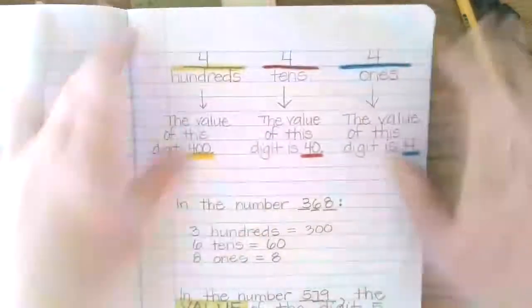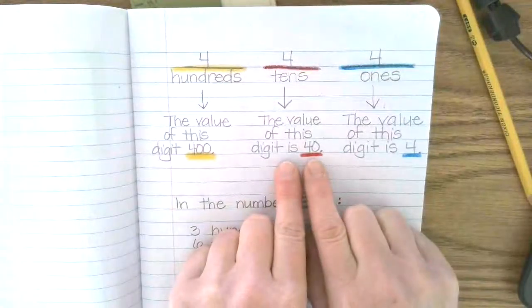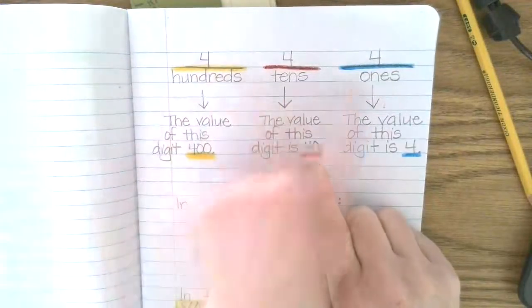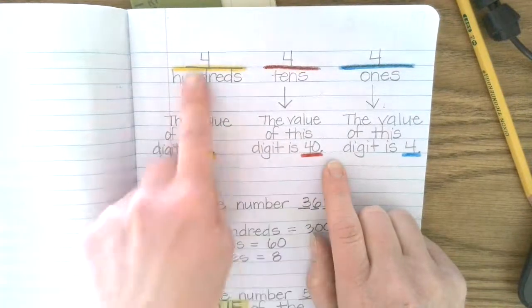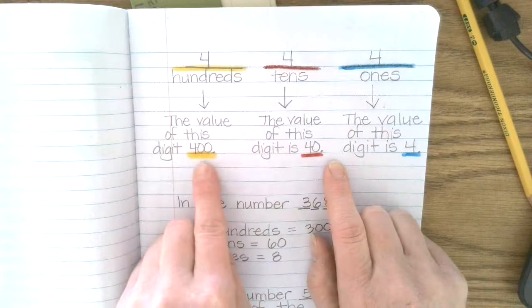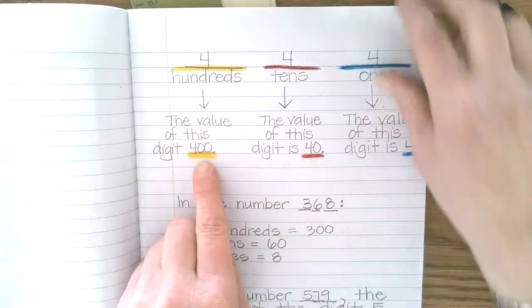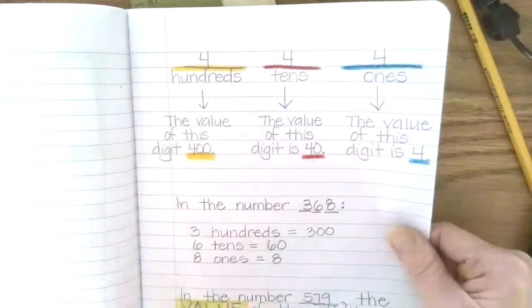Make sure that you remember this is the value page. So for example, in this number, four tens has a value of 40. Four hundreds here has a value of 400.